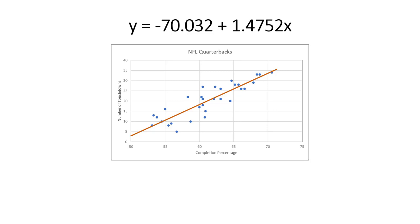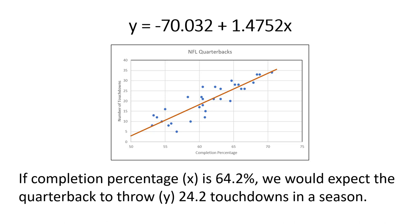So if I drop a value out of my head in for x, I can then solve for a predicted value of y. And that's what I did. If completion percentage is 64.2%, we would expect, remember it's an expected value,